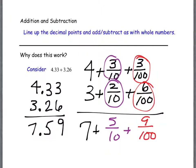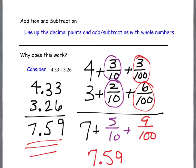So we do, in fact, have 7, 5 tenths, and 9 one-hundredths — which is exactly what we got when we used the algorithm. We got the 7, the 5 in the tenths place, and the 9 in the one-hundredths place. That's why we line those decimals up: because they actually have the same fractional value.